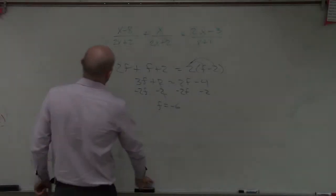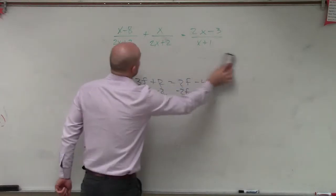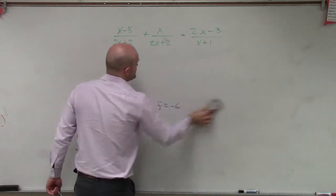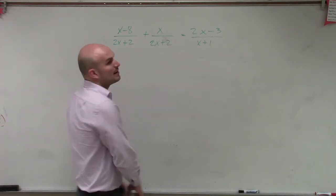All right, so what we have here is x minus 8 divided by 2x plus 2 plus x divided by 2x plus 2 equals 2x minus 3 divided by x plus 1.